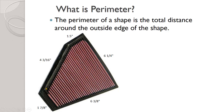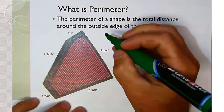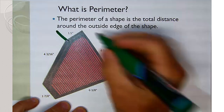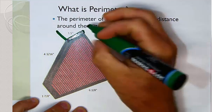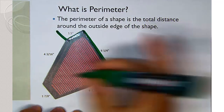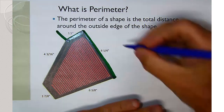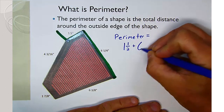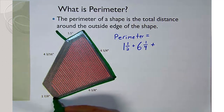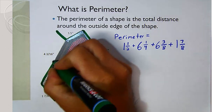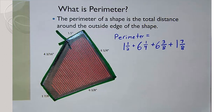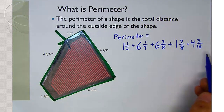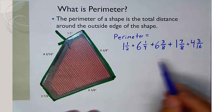So as long as those edges of a shape are straight, that's pretty easy. To find the perimeter, we just choose a starting point — right up here. Our top edge is one and a half inches, our right edge is six and a quarter. We're going to add all these up using fractions. So our perimeter is one and a half, plus six and a quarter, plus six and three eighths, plus one and seven eighths, plus four and three sixteenths.